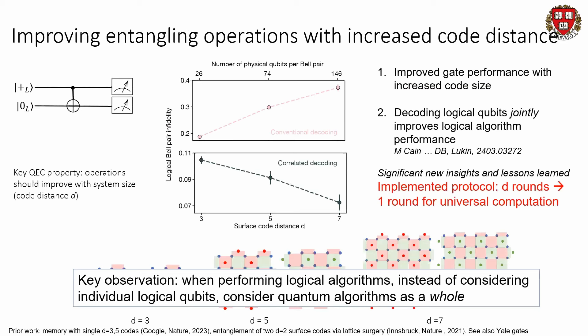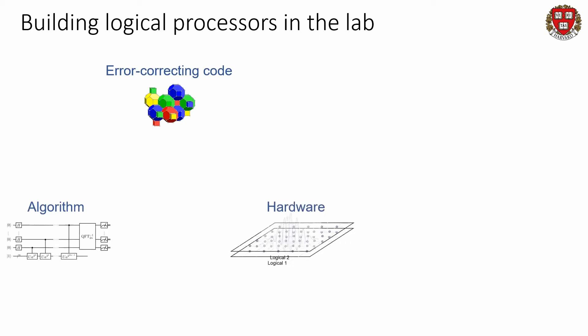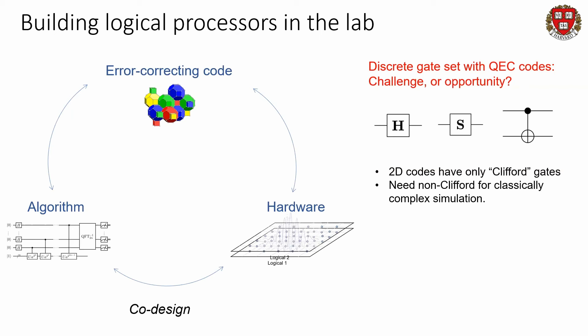We would like to do more interesting types of quantum simulations with our logical qubits. A major challenge is that error-correcting codes are not as tunable as the physical qubits we're used to. Something quite funny about these quantum error-correction codes is that we only get discrete gates — like a Hadamard or an S gate or a CNOT. For 2D codes like the surface code, we can only do the so-called Clifford gates, but we really need non-Clifford operations to do things that are classically complex and hard to simulate. With physical qubits, you can do arbitrary single-qubit rotations but entanglement is very hard; with logical qubits, it's a completely upside-down world — continuous rotations are the hardest thing, but entanglement is very easy.